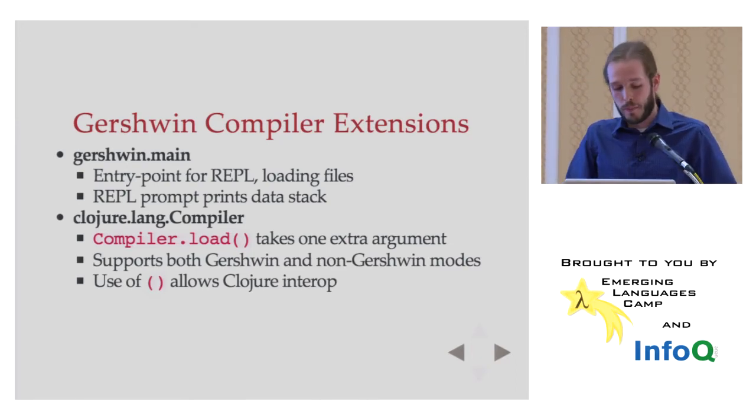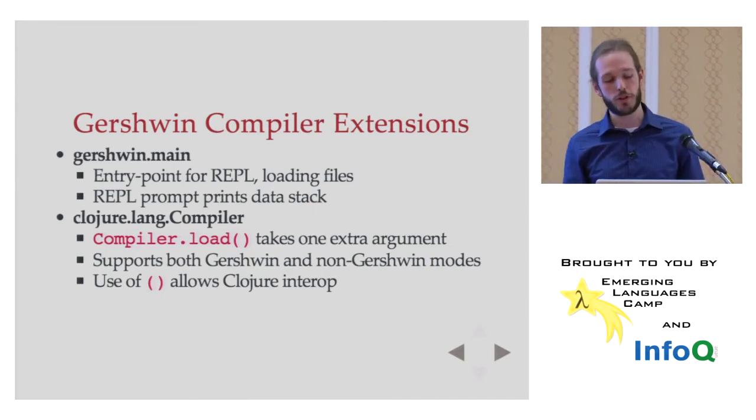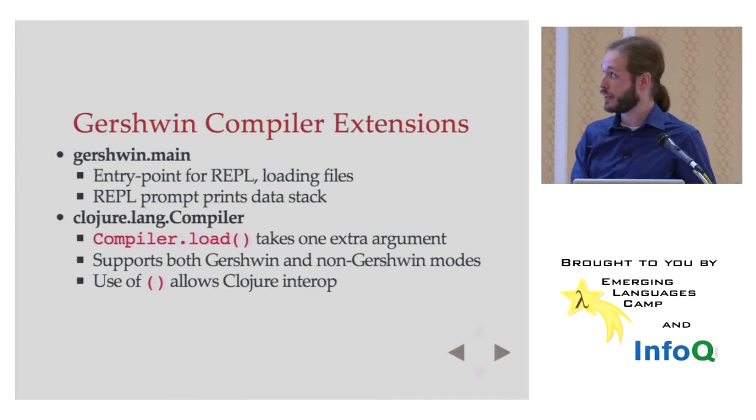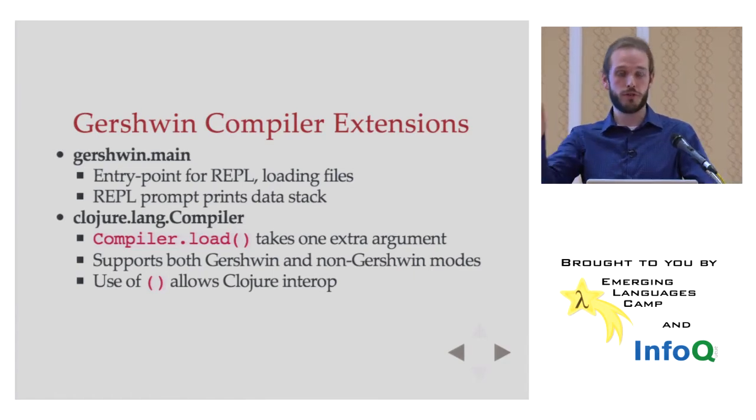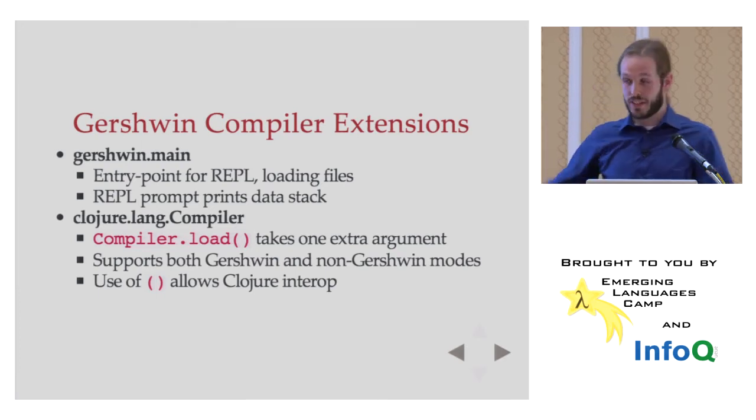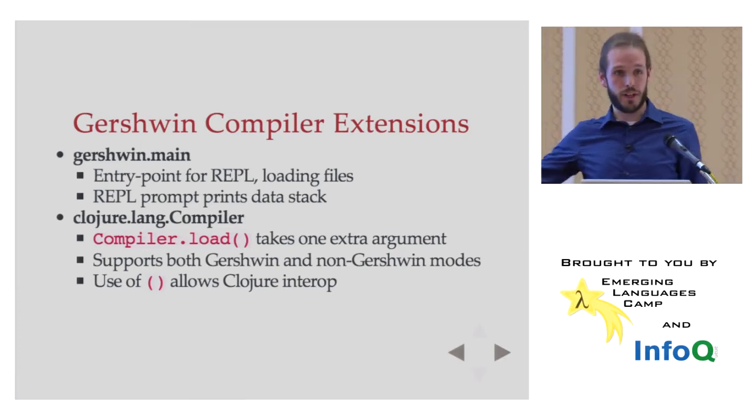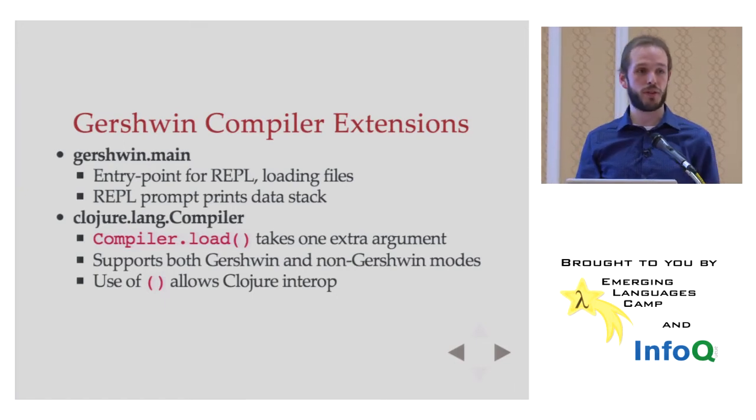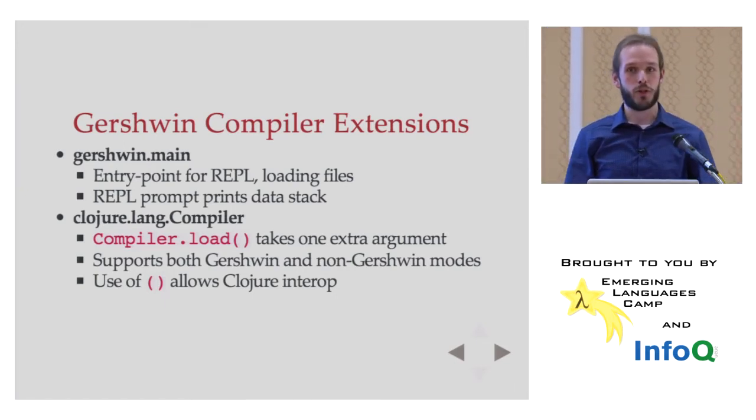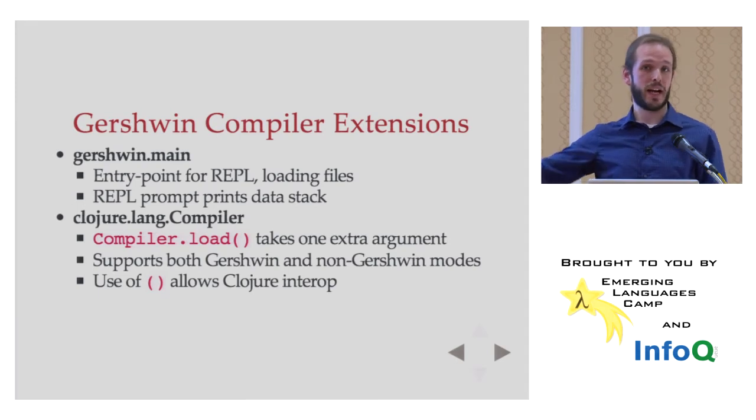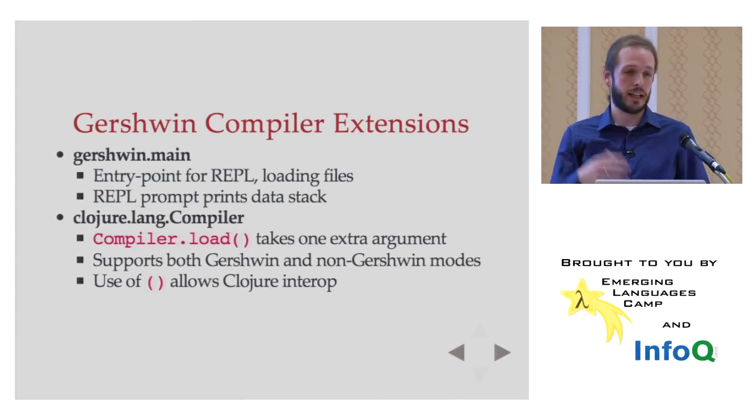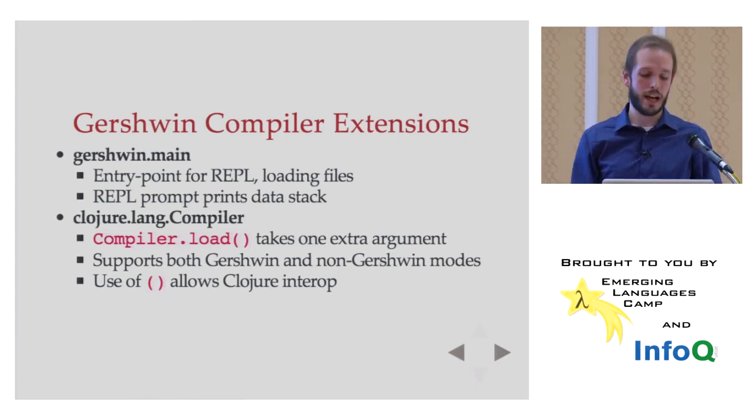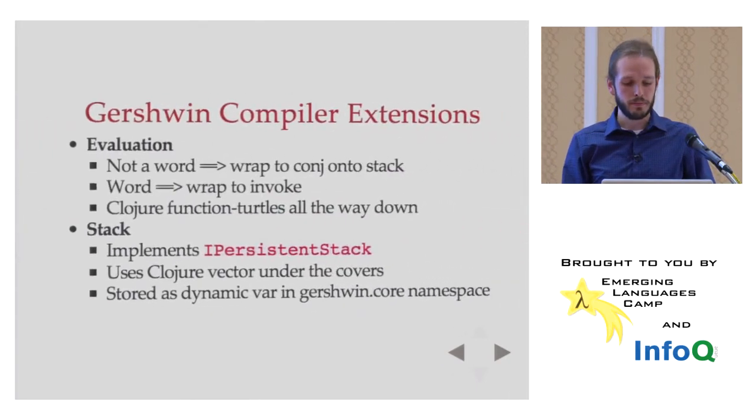But if you decide to use the entry points defined by Gershwin, then you'll get some Gershwin extra handling. So Gershwin main, parallel to Clojure main, provides an entry point for starting a Gershwin REPL and for loading files. The difference in the REPL is mainly that it prints the stack instead of printing return values from things being invoked. The compiler itself, again, additive changes. So the main load function in the compiler is compiler load. The other one is load file, et cetera. But load is the main one. It takes one extra argument which says, am I in Gershwin world or am I not? And that's it. If you're not in Gershwin world, it's just Clojure. If you're in Gershwin world, it's Gershwin. I said there's no parentheses in Gershwin. I lied. There is. It's for Clojure interop.